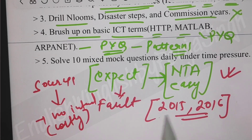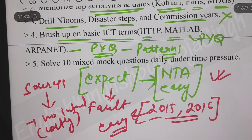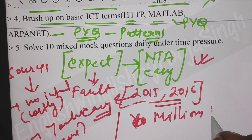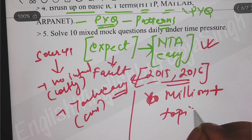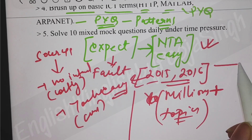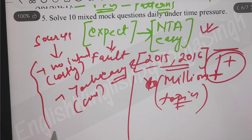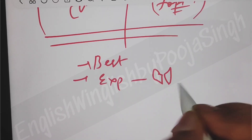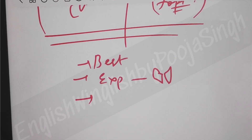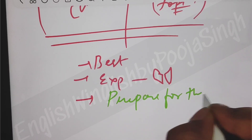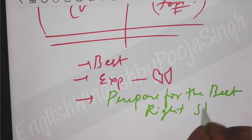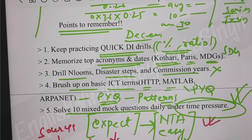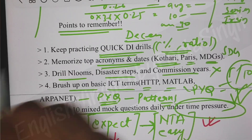Expectations always hurt. What we can do now is prepare for the best with the right strategy. For the upcoming exam: practice quick DI drills - percentages and ratios should be on your fingertips. Learn acronyms and dates: Kothari, Paris Agreement, MDGs, SDGs. Brush up on ICT terms like HTTP. Also, drill Bloom's taxonomy, disaster management steps, and commission years. Solve 10 mixed questions daily under time pressure - not in a relaxed way.